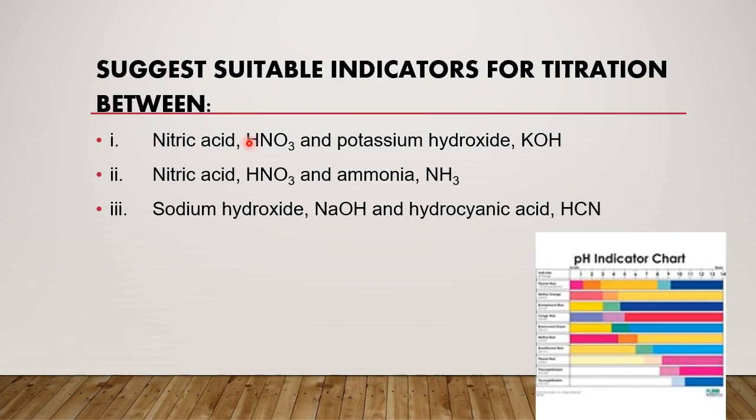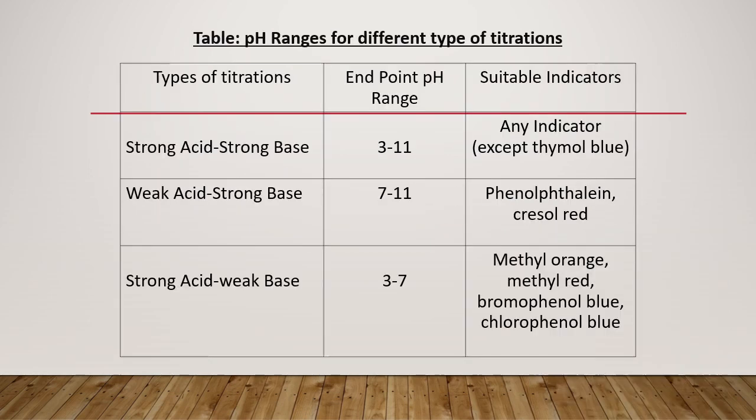Suggest suitable indicator for titration. There are three questions you have to suggest indicators for. There are many indicators that can be used. So first we have to have the idea: normally for strong acid strong base, the endpoint pH range is between 3 to 11, so any indicator can be accepted except thymol blue. For weak acid strong base, the endpoint pH range is around 7 to 11, so phenolphthalein or cresol red is suitable. And strong acid weak base, the endpoint pH range is 3 to 7.